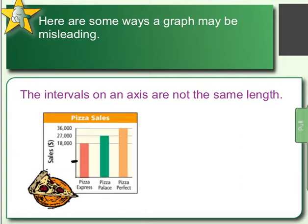Our next way to show difference is intervals on the axis are not the same length. As you can see, we are going from 0 to 18,000 — this huge jump — and then from 18,000 to 27,000, and 27,000 to 36,000, that's just an increase of 9,000 each. But from that first jump — 0 to 18,000 — they're actually combining 0 to 9,000 and 9,000 to 18,000, so they are not showing the axis having the same length between intervals.